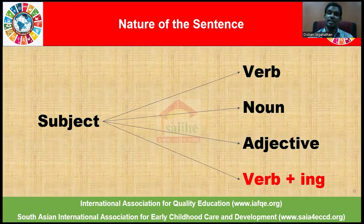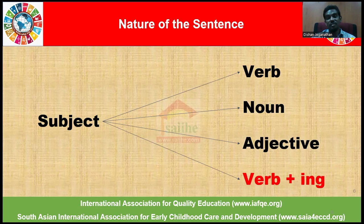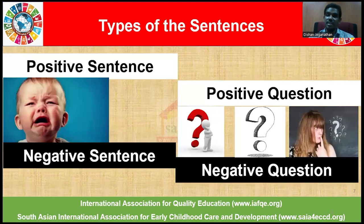Today we'll be looking at Lesson 15, which is on modal verbs while using Present Continuous Tense with ING. To make a meaningful sentence, we need to have a subject with a verb, noun, and adjective, and here we'll be making use of modal verbs — a modal verb plus the main verb. The types of sentences we'll go through are positive sentences, negative sentences, positive questions, and negative questions.